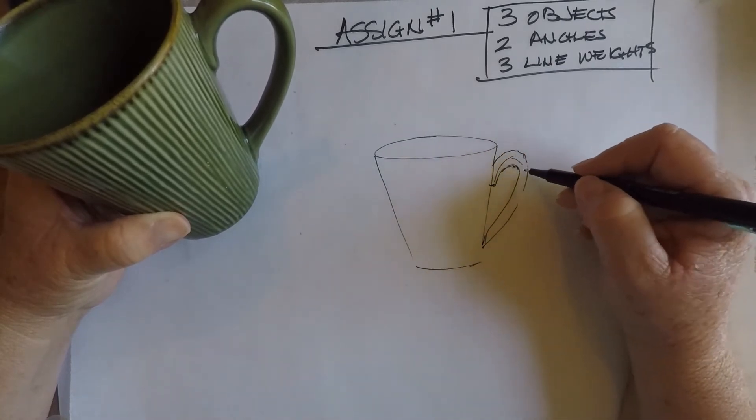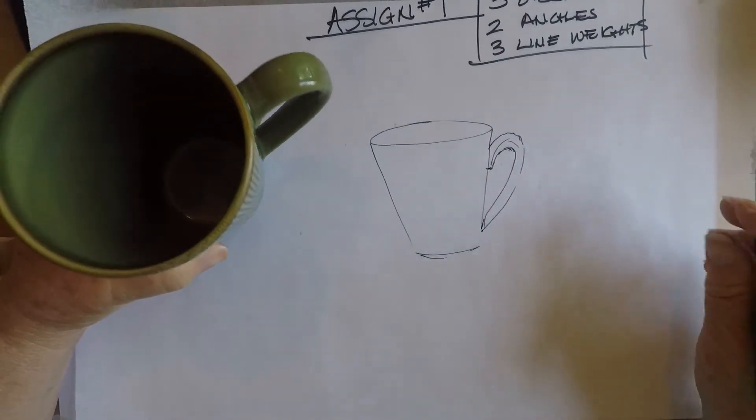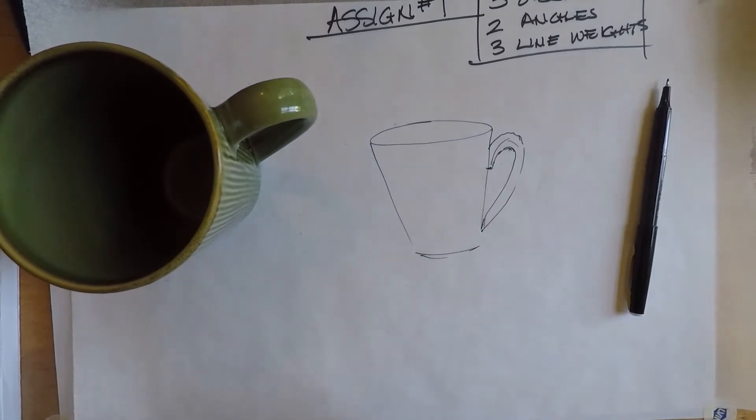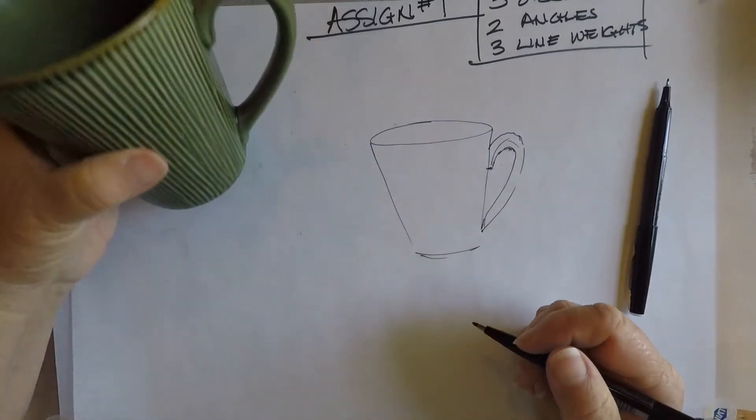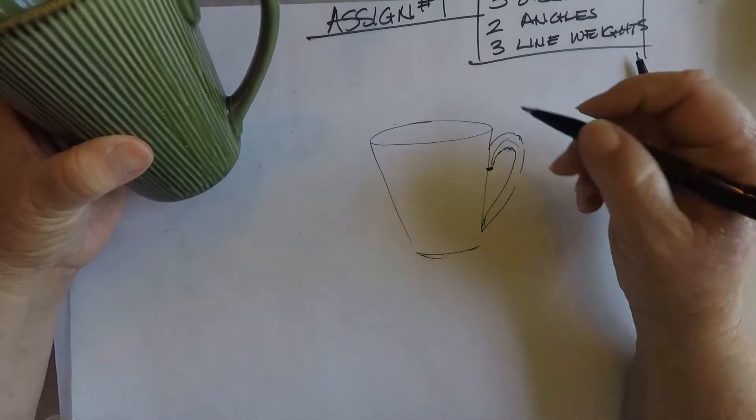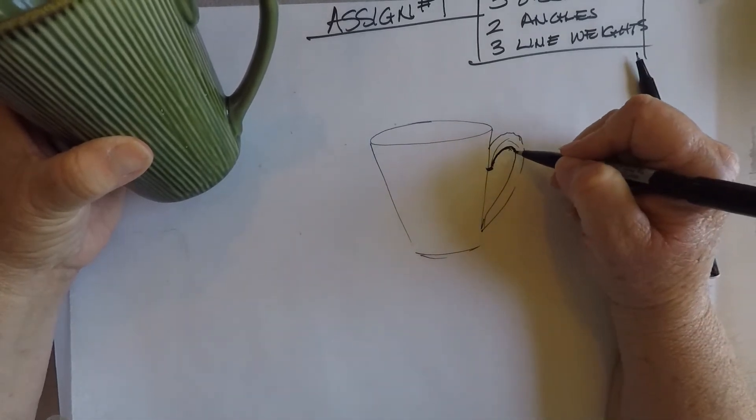All right, and now I'm going to go back in with my sign pen. And where I see underside curves or overlap, I'm going to go ahead and put a heavier line weight.